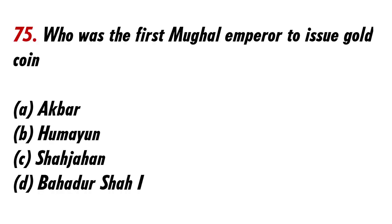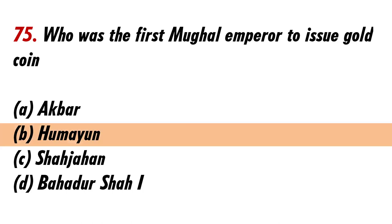Who was the first Emperor to issue a gold coin? Answer B: Humayun.